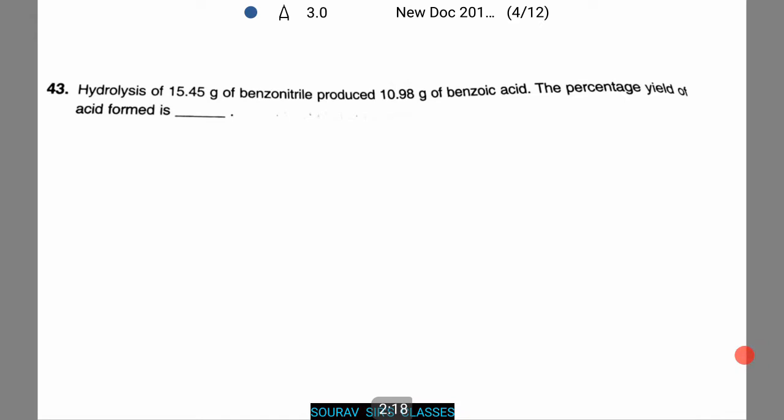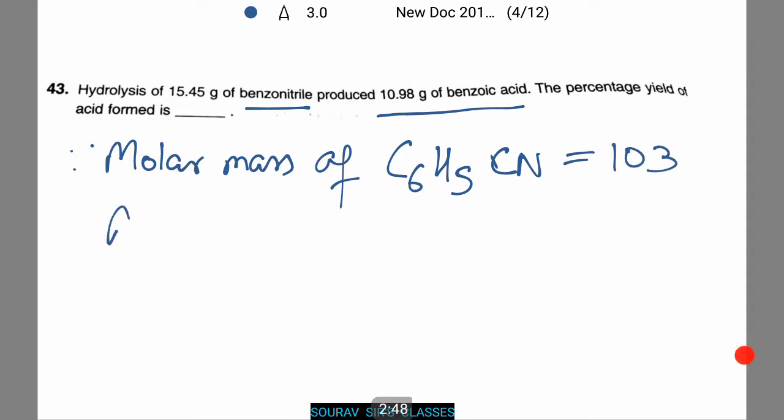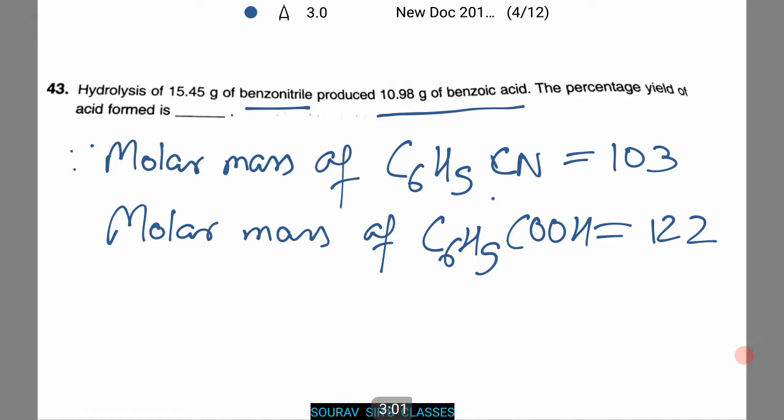It is said that on hydrolysis of 15.45 grams of benzonitrile produced 10.98 grams of benzoic acid. Therefore we need to find the percentage yield of the acid formed. Since molar mass of C6H5CN equals 103 and the molar mass of C6H5COOH equals 122, this is the benzonitrile that we are using, and the next case is the benzoic acid.